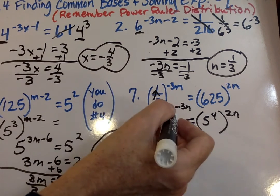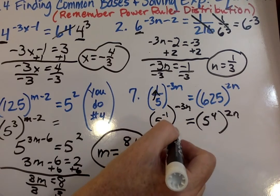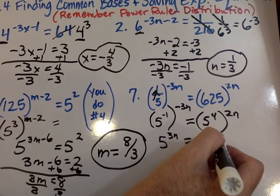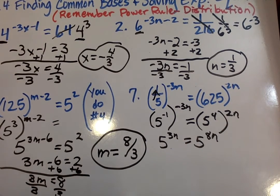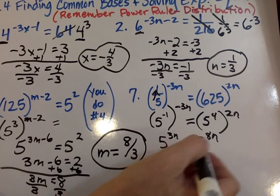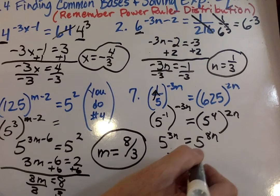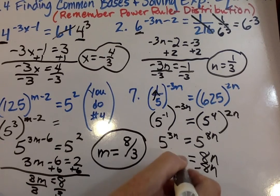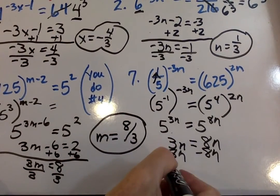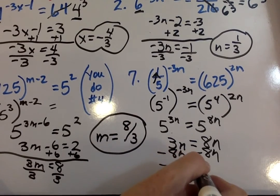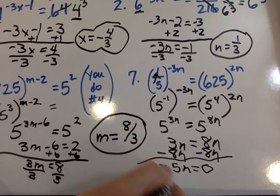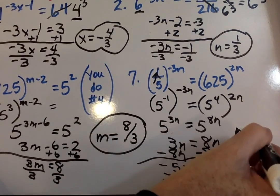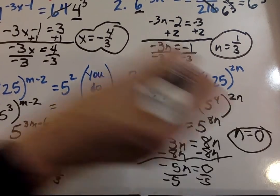we multiply these two and it's going to be 5 to the positive 3n equals 5 to the positive 8n. Now we can set these equal to each other. We got the same base here. 3n equals 8n. If I go minus 8n, minus 8n, we get negative 5n equals 0. Divide by negative 5 and n equals 0.